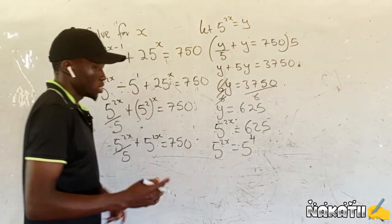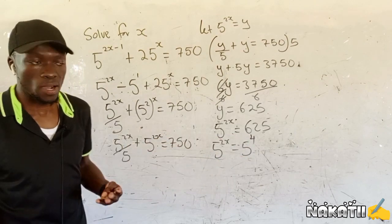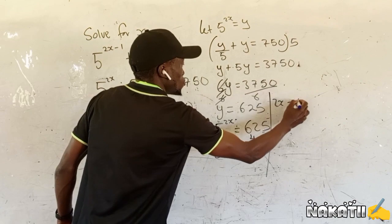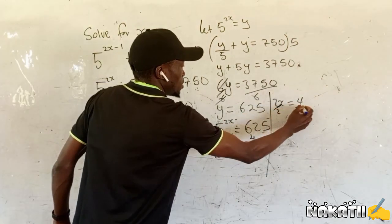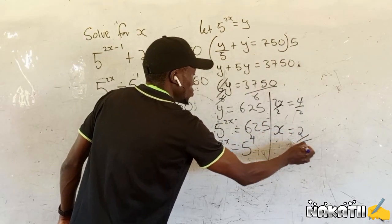Now, we say in laws of indices, when the bases are the same, we equate the powers. Hence, we're going to have 2x equals 4. We get the value of x. We divide both sides by 2. And finally, our x will be equals to 2.